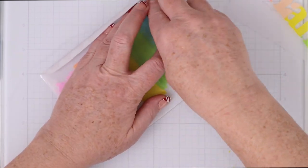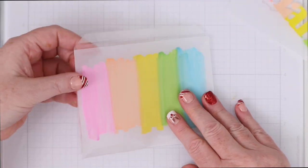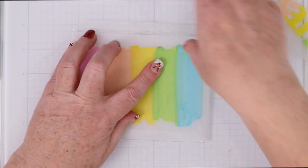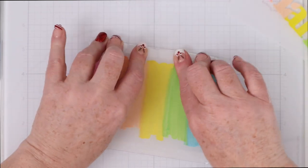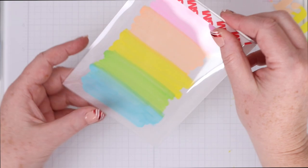The thing with the vellum is it wants to curl a little bit especially when you paint on it so just hold it straight while you're bringing in those side flaps and the bottom flap this way you don't have a curled image inside your shaker infinity shaker cover there see nice and flat.